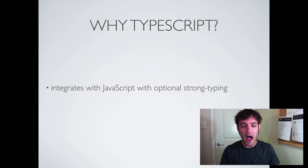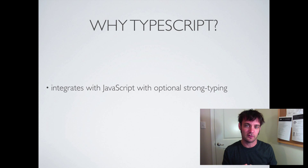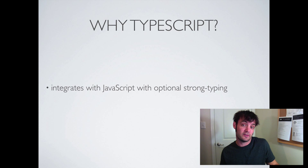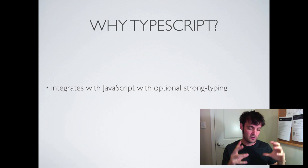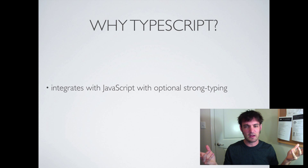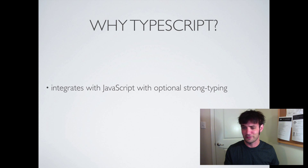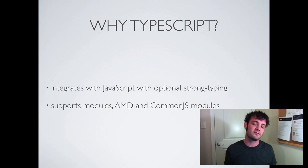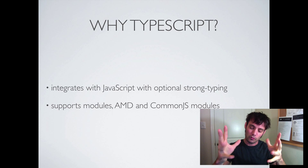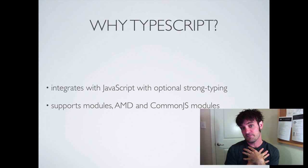It integrates with JavaScript via optional strong typing — you can do a little TypeScript or a lot. You can integrate with untyped languages and simply won't get type safety, or you can wrap a strongly typed contract around them via interfaces, like with jQuery overrides. Strong typing is optional — if you don't want to strongly type strings or want to type everything as 'any,' that's fine. It also supports modules and exports to RequireJS.